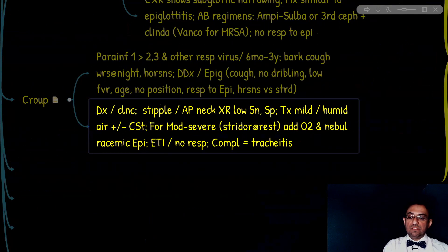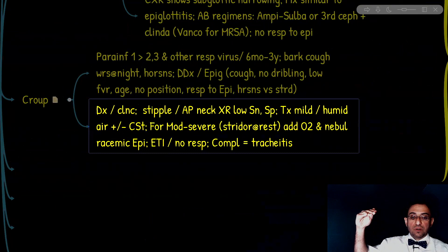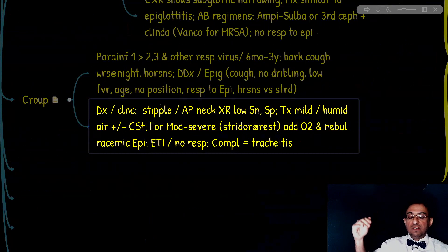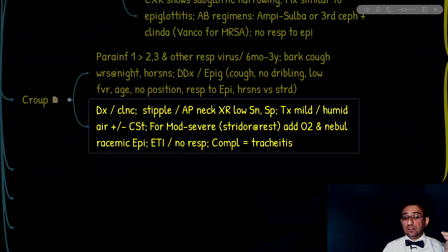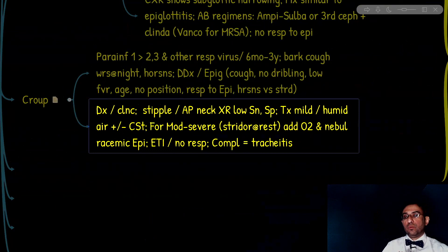What is the treatment for croup? The first step is stratification of the patient's symptoms into mild, moderate, or severe. If mild, treat with humid air or cool mist, and consider corticosteroids. The best index of severity is presence or absence of stridor — indicating upper airway compromise — or presence or absence of respiratory distress. Either of these at rest indicates severe; if present with activity, indicates moderate severity. For moderate to severe cases, add oxygen supplementation and consider nebulized racemic epinephrine. If there is no response to these measures, consider endotracheal intubation.